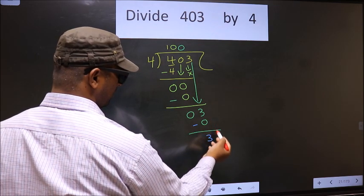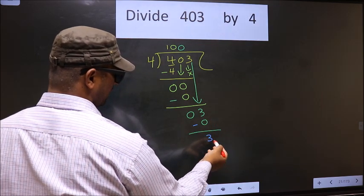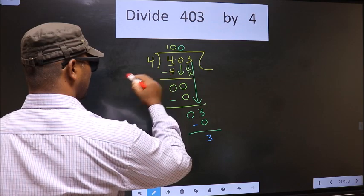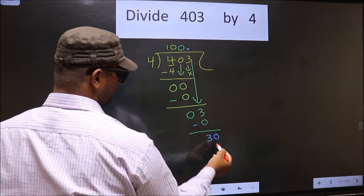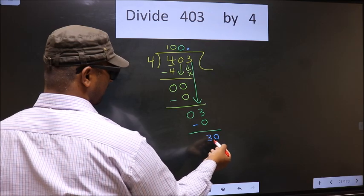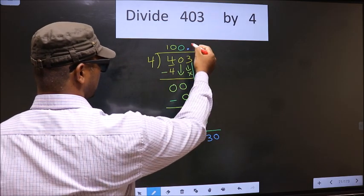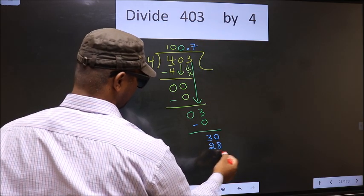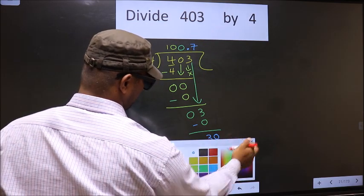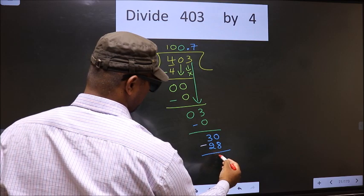Over here we did not bring any number down and 3 is smaller than 4. So, now you can put a dot and take 0. Now, here we have 30. A number close to 30 in 4 table is 4 7 is 28.